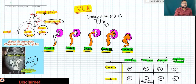With the help of MCU we can diagnose VUR — Vesicoureteric Reflux. In this condition there is retrograde flow of urine from the bladder to the ureter and finally to the renal pelvis, which causes damage to the kidney.